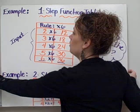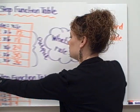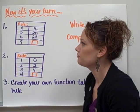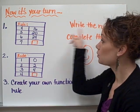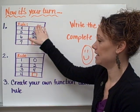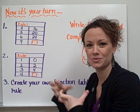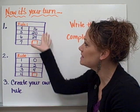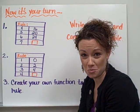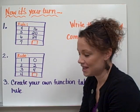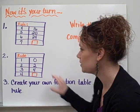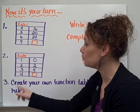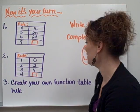Alright, it's time for you to try some on your own. I have two tables here that I've written for you. And what I would like you to do is write the rule. So what is happening to the inputs to get our outputs. What's happening to the numbers when they're thrown into that machine. And I'd also like you to complete the blanks in the table as well. So please copy these examples into box number three of your homework sheet. Write the rule and complete the table. And for number three, I would also like you to create your very own function table and to write the rule of what your table is. Alright, good luck on that.